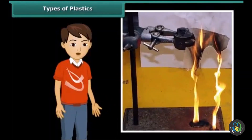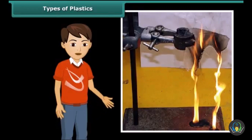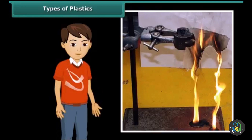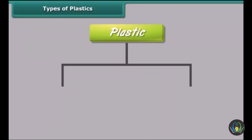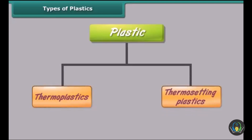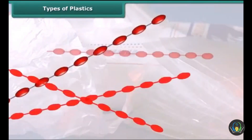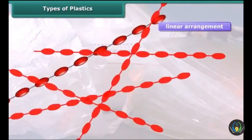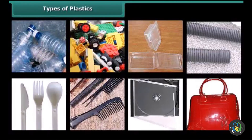Have you ever observed what happens when a polythene bag is burnt? Yes, it melts and you can see its droplets falling off, apart from the pungent smell it produces. Do all plastics melt upon burning? There are two types of plastics based on their reaction upon being heated: thermoplastics and thermosetting plastics. The constituent units of thermoplastics have a linear arrangement — examples include combs, disposable cutlery, CD and DVD cases.